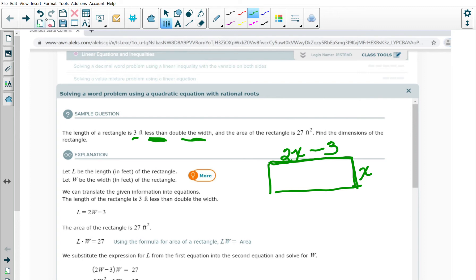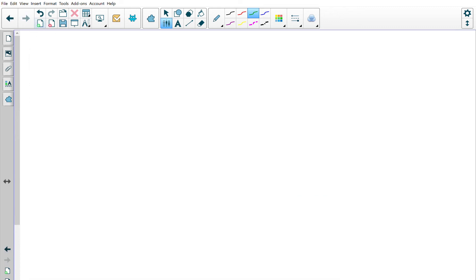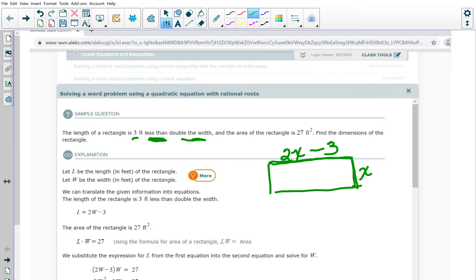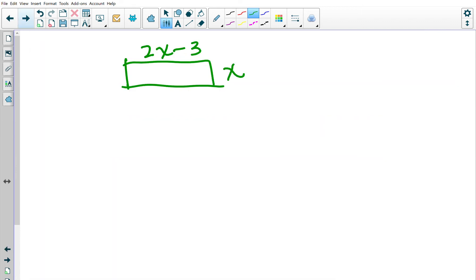I'm going to move to a clean piece of paper here. This is X and this is 2X minus 3, and I want to find the dimensions. But they also tell us we need one more piece of information: the area is 27 square feet.